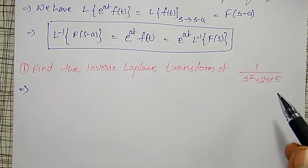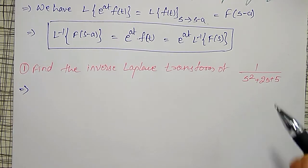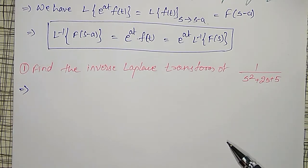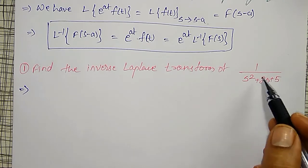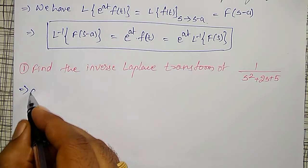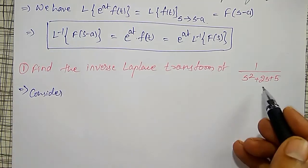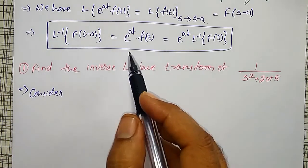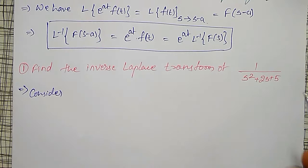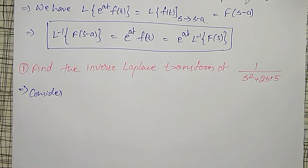The roots may be complex, so we will convert the denominator into a perfect square. If the factors are not available, then only we go to this method. Otherwise, if the factors are available, then by the partial fraction method we can do it. We have s squared plus 2s plus 5, and we will apply the completing-the-square method.